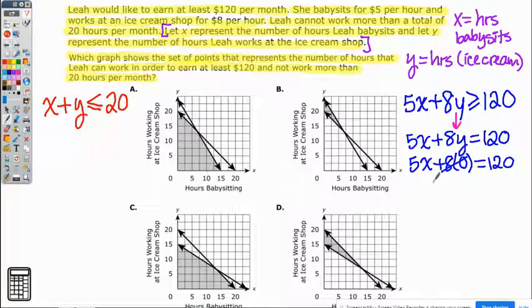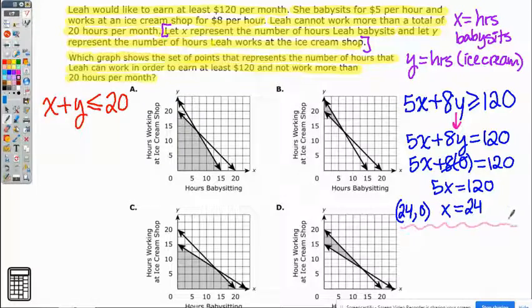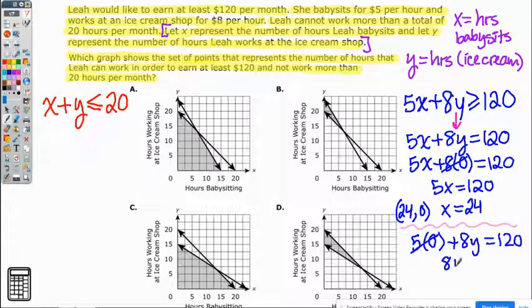We're going to take time to plug in 0 for y to find our x-intercept. 8 times 0 is 0, so then you get 5x equals 120. If you divide both sides by 5, you'll get 24. So then that means it's 24, 0 as your x-intercept. Alright, and now we're going to do the same thing for the y-intercept. So you have 5 times 0 this time because you want to know your y-intercept. 5 times 0 is 0, so you have positive 8y is equal to 120. Divide both sides by 8, and you get 15. So now you get 0, 15.